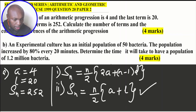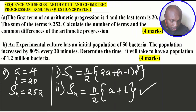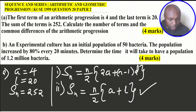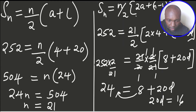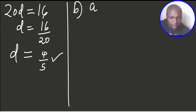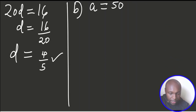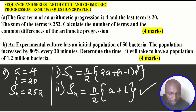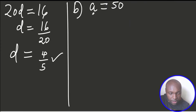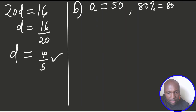Moving to Part B: an experimental culture has an initial population of 50 bacteria, increasing by 80% every 20 minutes. We need to decide whether to use arithmetic or geometric progression. For AP there must be a common difference; for GP there must be a common ratio. The 80% increase represents a ratio, so this is a geometric progression.